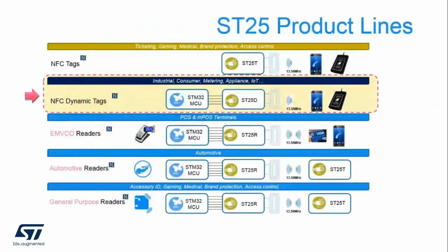Typically, NFC tags store static data and can only be updated via RF readers — RFID systems that comprise a microcontroller and NFC transceiver such as the ST25R. In this chart, you can see EMV readers are used for mobile payment. Automotive readers are used to perform various tasks inside cars. General purpose readers are used to connect to your PC and are used for all sorts of reading and writing to standard tags. In focus of this design, we use the NFC dynamic tag.